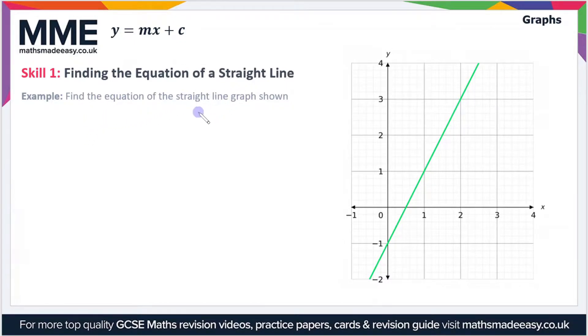In this example we have to find the equation of the straight line that's in the graph shown. So I'm going to rewrite the equation just in big here: y equals mx plus c. Now in order to find the equation there are two parts that we're interested in. The first is this m value and the second is this c value.